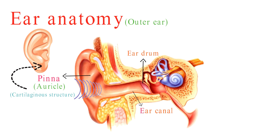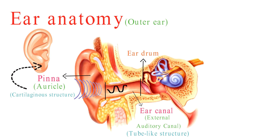Next is the ear canal, also known as the external auditory canal. It is a tube-like structure that extends from the pinna to the eardrum. It is lined with specialized skin and small hairs that help trap foreign particles and protect the ear. The ear canal directs sound waves toward the eardrum.